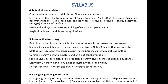Topic number 4 is Botanical Nomenclature. Under this topic we have to study the concept of nomenclature, brief history, binomial nomenclature, the International Code for Nomenclature of Algae, Fungi and Plants, principles, rules and recommendations, type specimen and its types: holotype, paratype, isotype, lectotype, neotype, and the concept of typification.